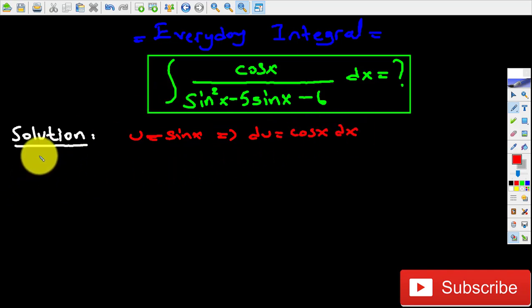Then my integral is going to become du over u squared minus 5u plus... let me rewrite it. It's going to be du over u squared minus 5u minus 6. Using partial fractions, I can rewrite this indefinite integral like this.